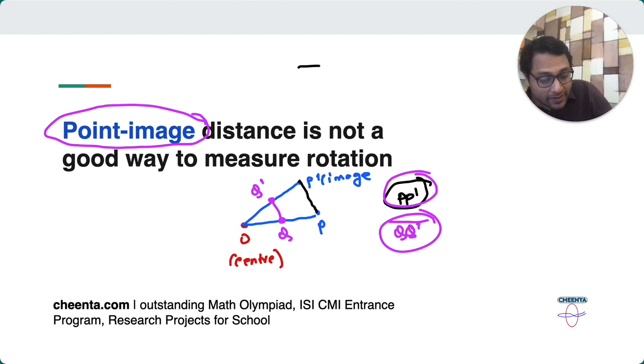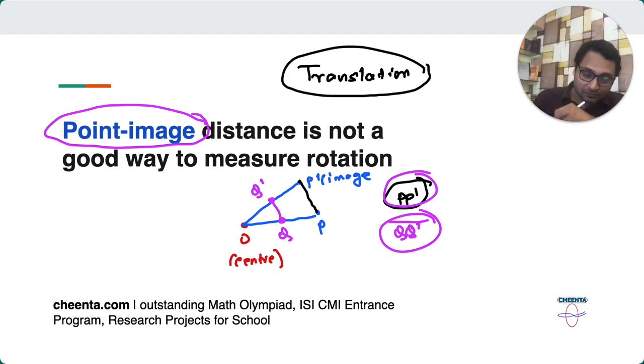In fact, I would tell you this. It's a little question that I have for you. So, for measuring translation, that is horizontal shift or parallel shift rather, to measure translation, distance can be a good measuring stick. Point image distance. Can you tell me why in the comment section? Now, that we understand, just point image distance is not a good way to measure rotation. We notice something else.